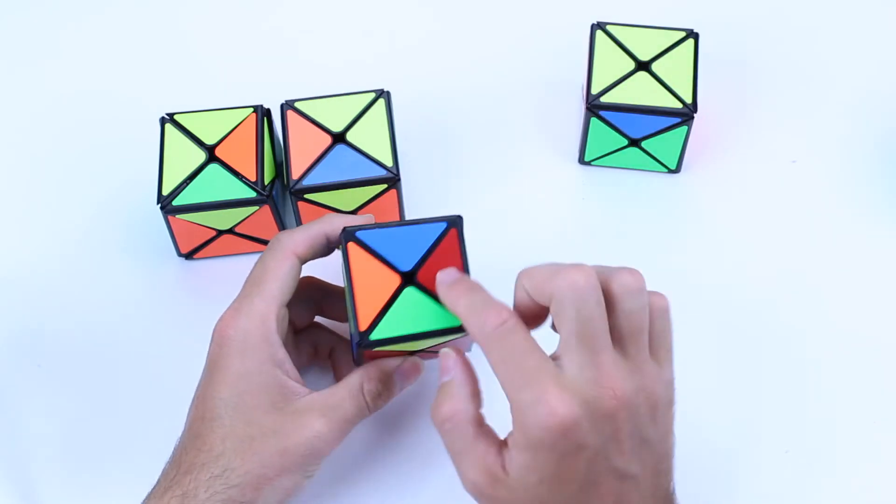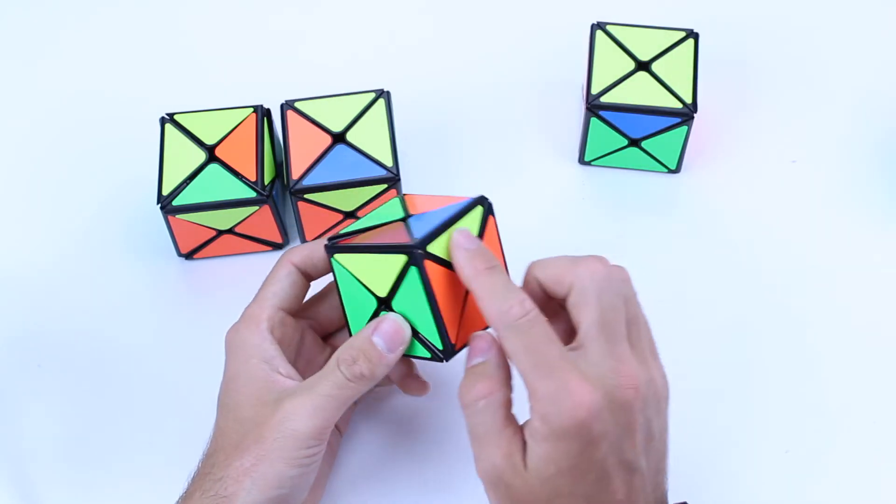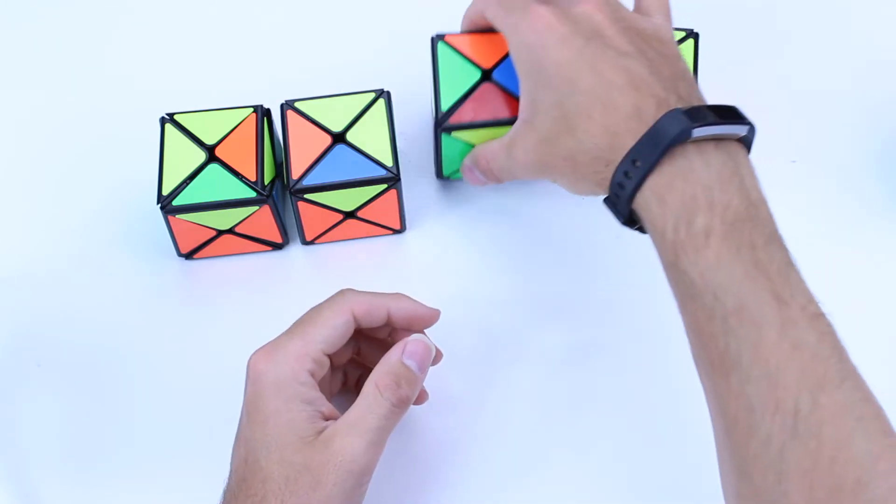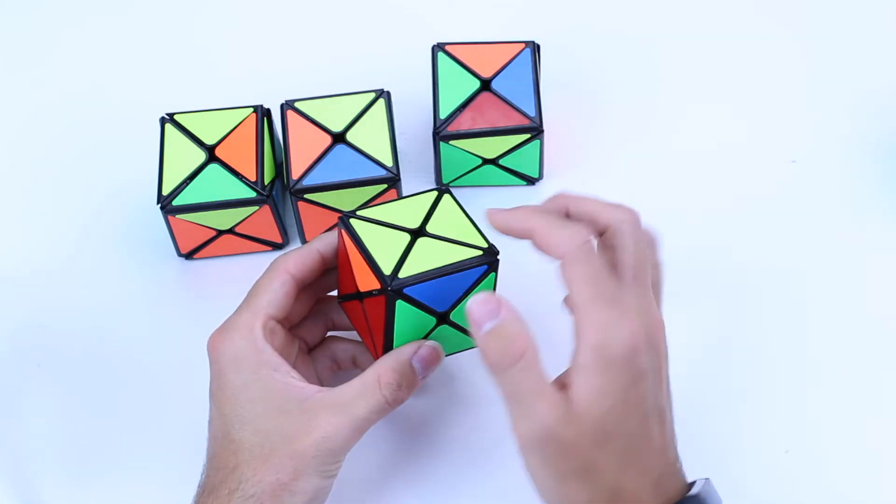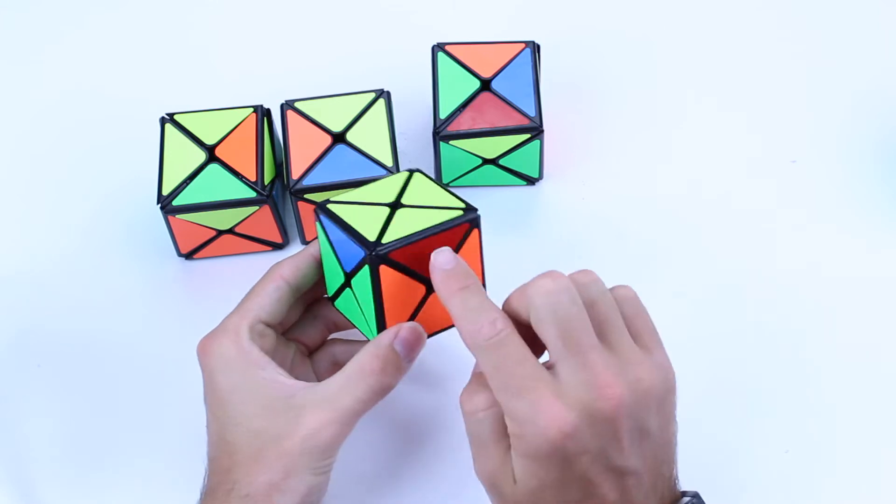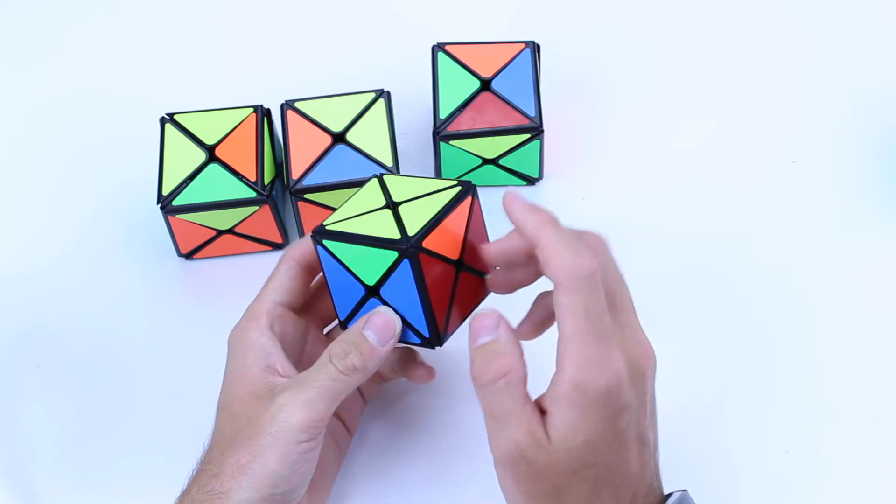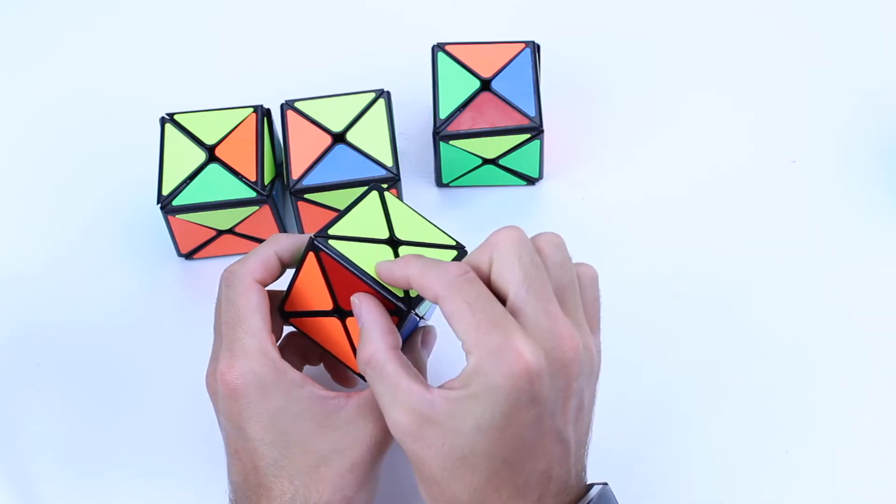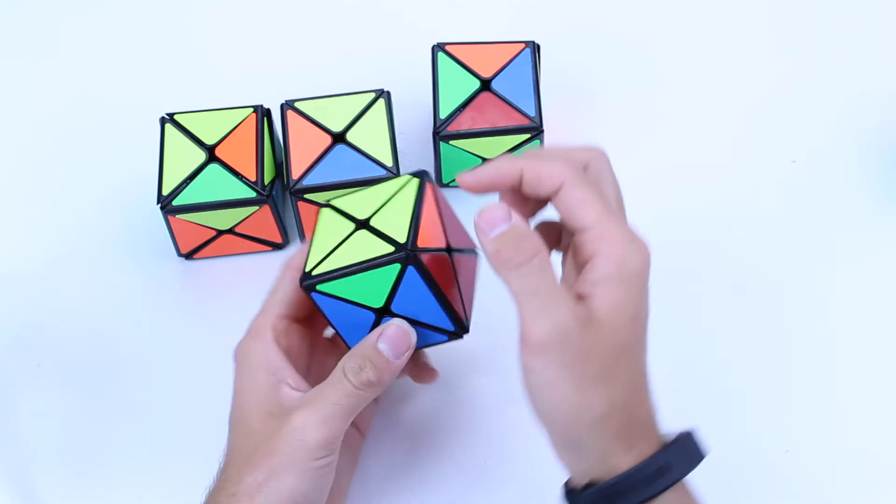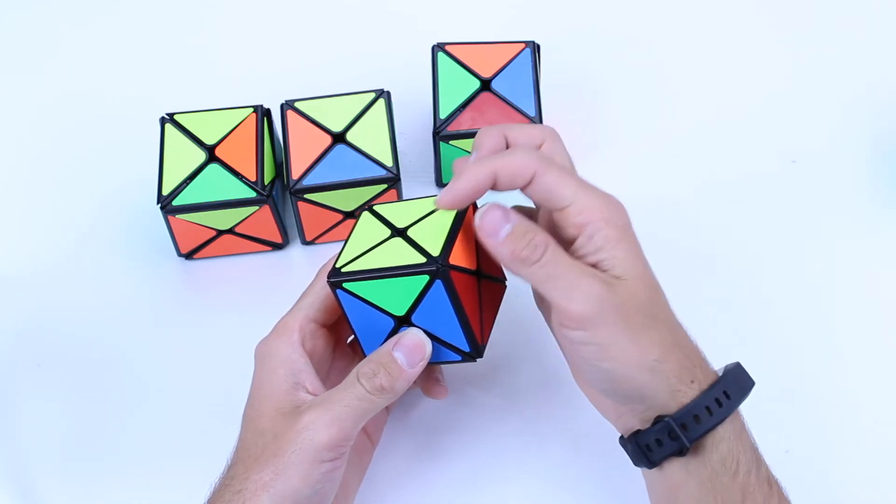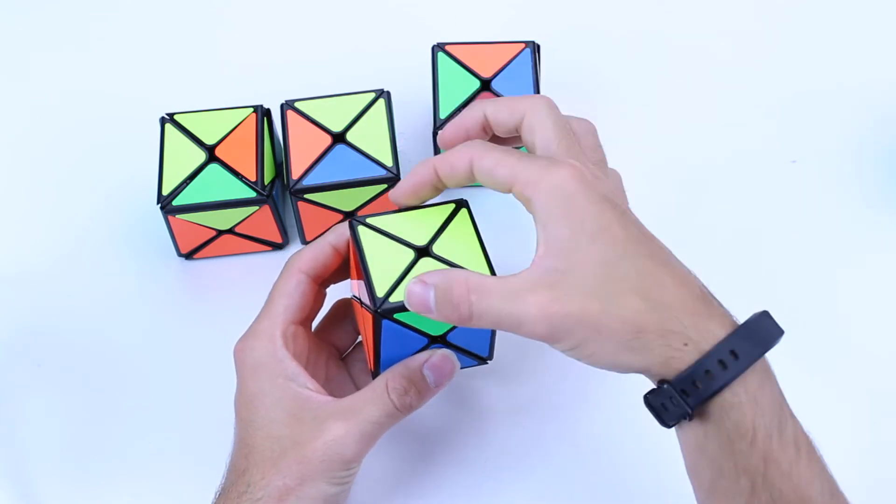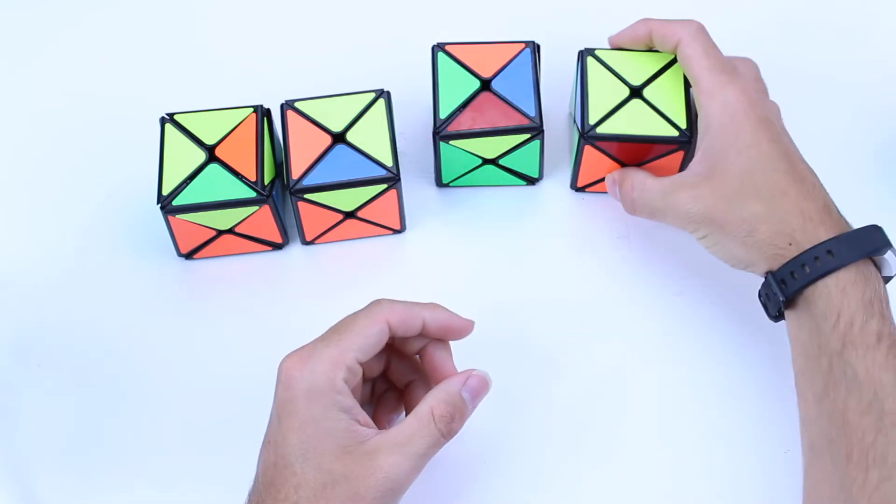This one, we've got no yellows on the top face. They're all in the opposite corners. So we want the yellow and orange to be here and the yellow and red to be here. And the same with this one, we just need to swap these two and these two.